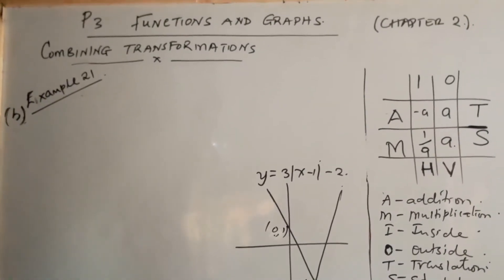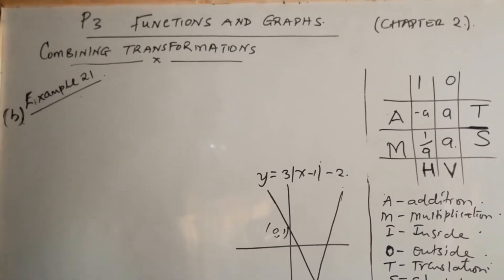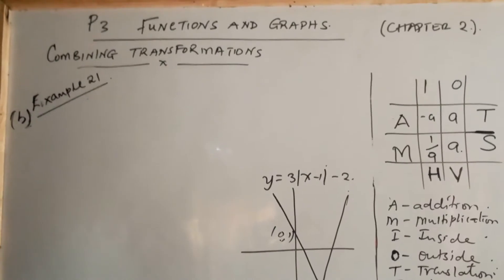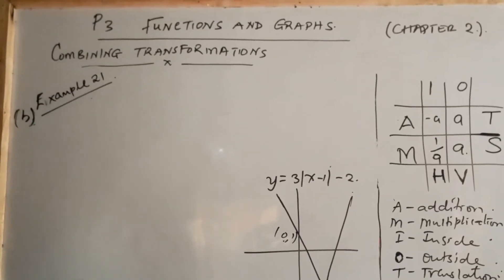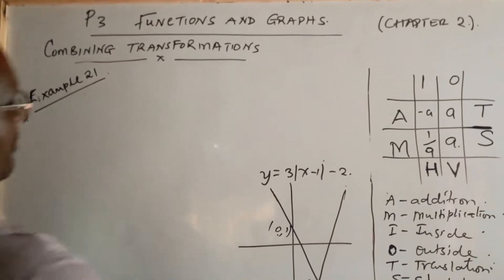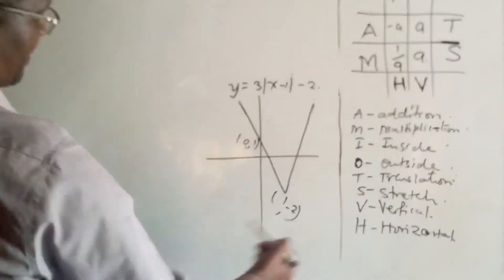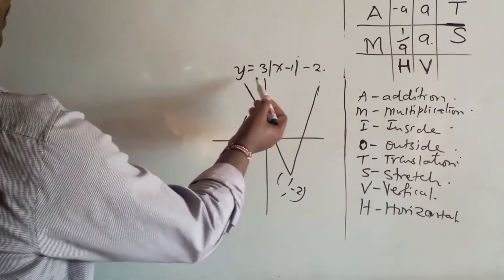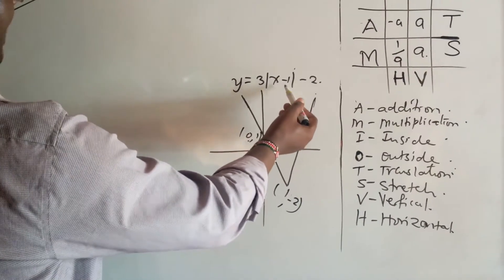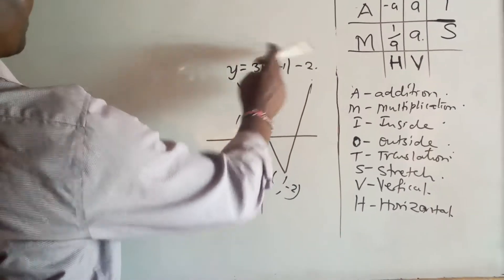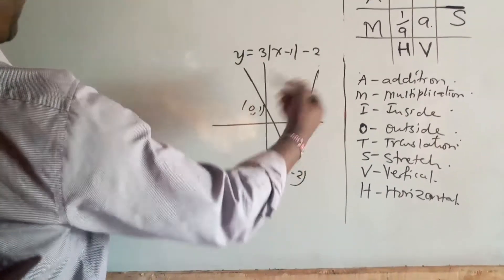In example 21 part B, we are told to state the range of the function. Part A has given us this result. So the function 3|x-1| - 2 is the graph we are having here.